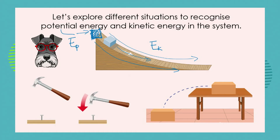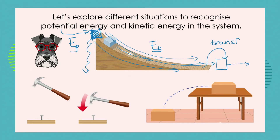The box at the top of the ramp, when it's not moving, has potential energy. It's got the potential to fall off the ramp if we haven't balanced it properly, the potential to slide down the ramp — that's when it gains kinetic energy. And if we had another box at the bottom of the ramp, it's got the potential to knock into that box and shift it along — in other words, to transfer the energy from itself to that other box.